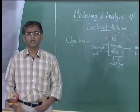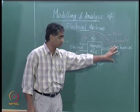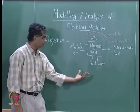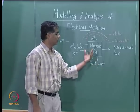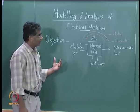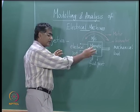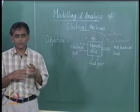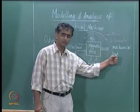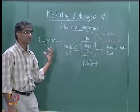An electrical machine has three places where it interacts with the external world: the mechanical side where a load may be rotated, an electrical side where you give electrical supply or take electrical output, and a field port where you give electrical input to establish the magnetic field. Any description of an electrical machine should therefore describe how this interaction happens — you should be able to reduce it to equations whereby, having given an electrical input, you know how the mechanical side will behave.